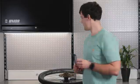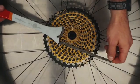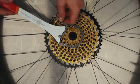So let's see how it works. Install the chain whip on one of the sprockets on your cassette.